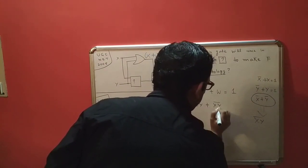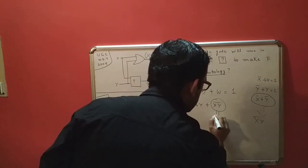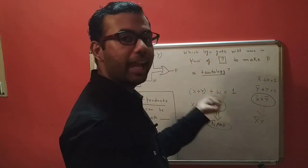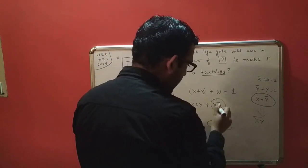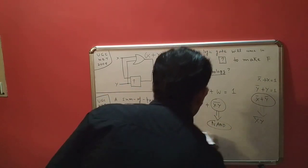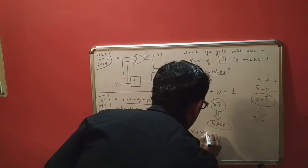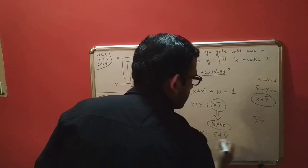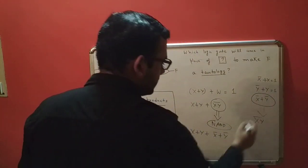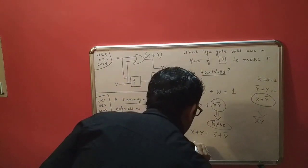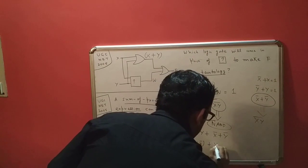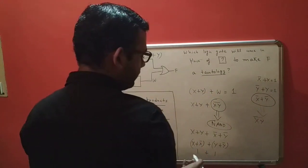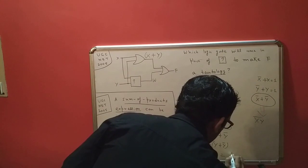So in place of w, if we get (xy)' — that means a NAND gate — this NAND gate would suffice. Because x OR y is OR-ed with x complement OR y complement, giving us x OR x complement OR y OR y complement. This gives a one from the first pair and a one from the second pair.